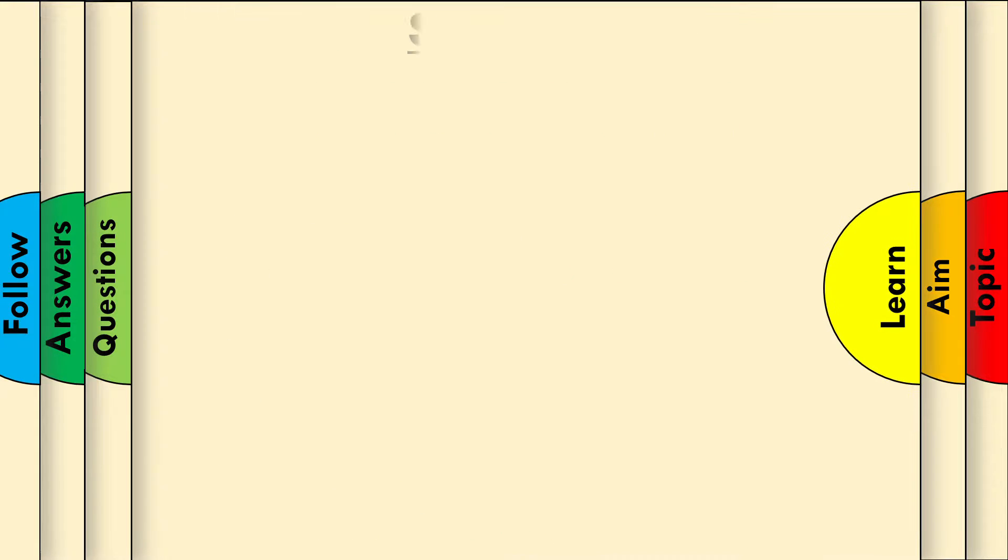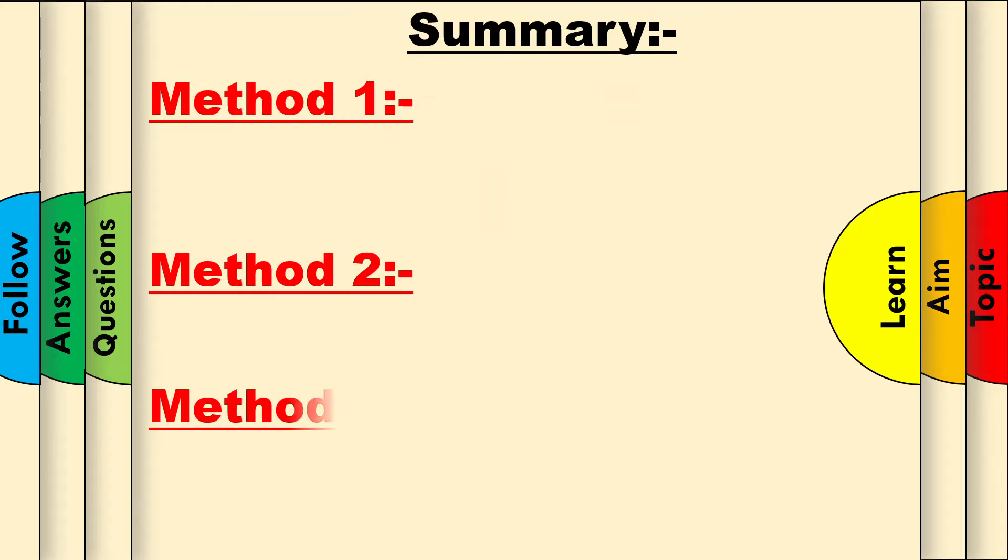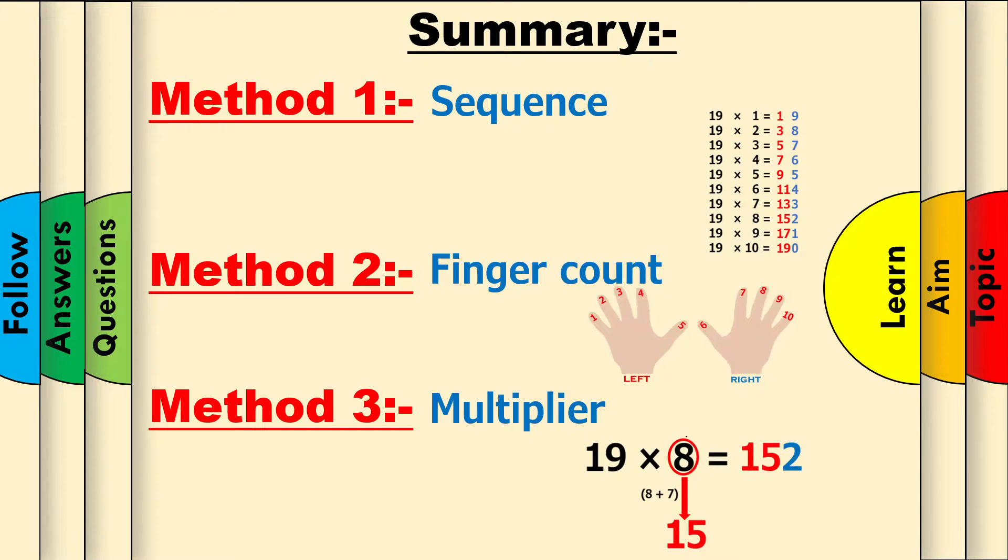Summary. We learned 3 techniques: the sequence, the finger count, and the multiplier. These techniques are similar for the 9 times table as well. Click the icon above to see that video.